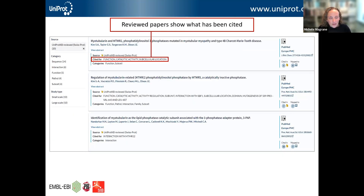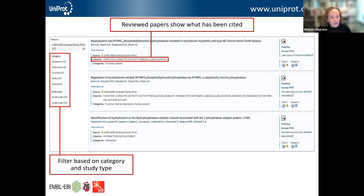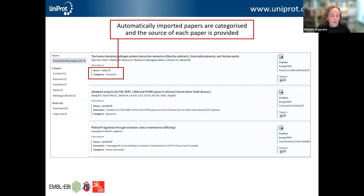For papers that have been curated during the UniProt curation process, there's a list of what has been cited and why — the information that paper has provided to the entry. You can filter publications based on category and study type — for example, to look only at small-scale papers and exclude large-scale papers. For papers imported from other resources, these are categorized and the source of each paper is provided. For example, a paper imported from IntAct, which is a resource storing information about protein interactions.